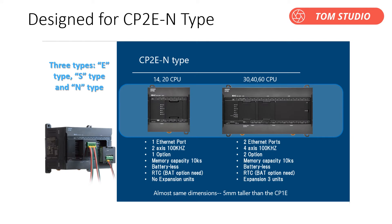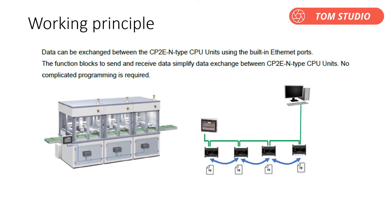Please be aware that the Send and Receive function blocks are only designed for CP2E N-type CPUs. E-type and S-type do not have an Ethernet port, so it is impossible to use these function blocks. The function blocks are designed for data exchange on CP2E N-type CPU units.